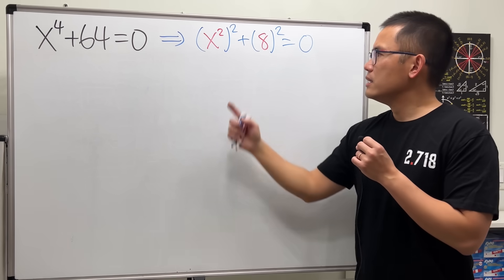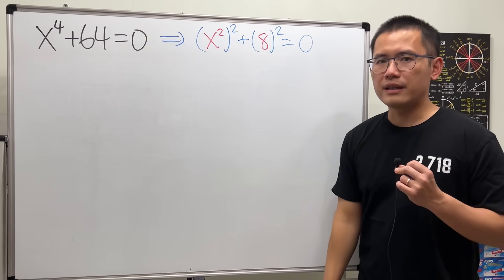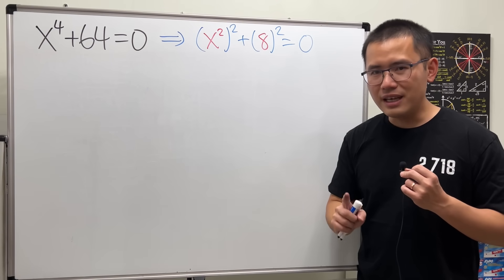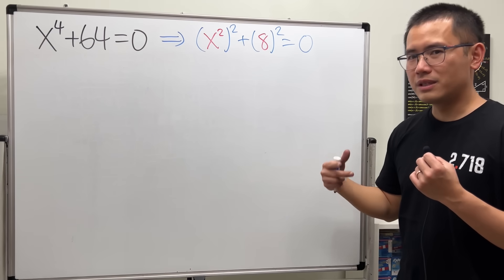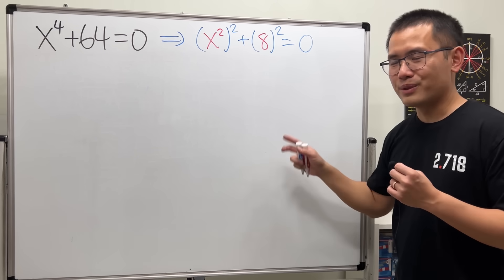And now you might be wondering, this is the sum of two squares. How can we possibly factor this? Well, I'll tell you, yes, this is factorable because it's a special case. This is the fourth degree. Sometimes it's possible, just like this.